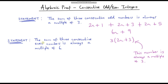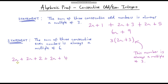Now we're going to prove one more statement, and this time we'll get straight to proving it using algebra without checking examples first. It says: the sum of three consecutive even integers is always a multiple of 6. The only difference is that instead of odd numbers we've got even numbers. We said 2n represents an even number, so our three consecutive even numbers are 2n, 2n + 2, and 2n + 4.